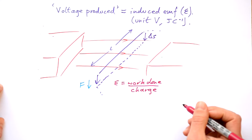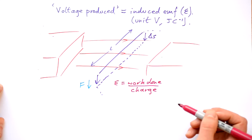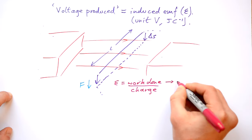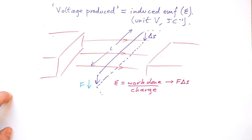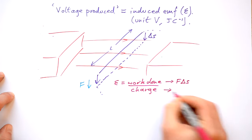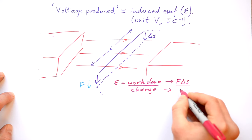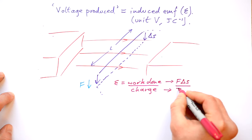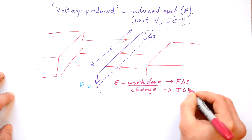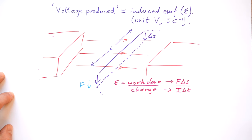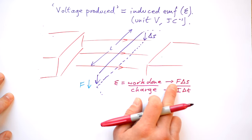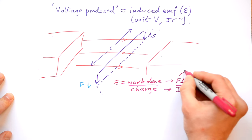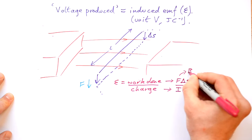You should remember that work done is force times distance, so this is F delta S. And we also know that charge equals current times time. Do you remember from our motor effect what force is produced due to the motor effect? That's going to be the same as the force that we're working against, so this is also going to be B I L.